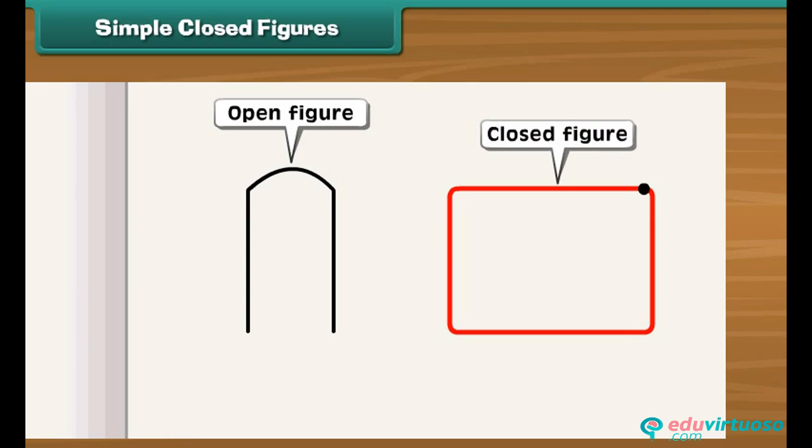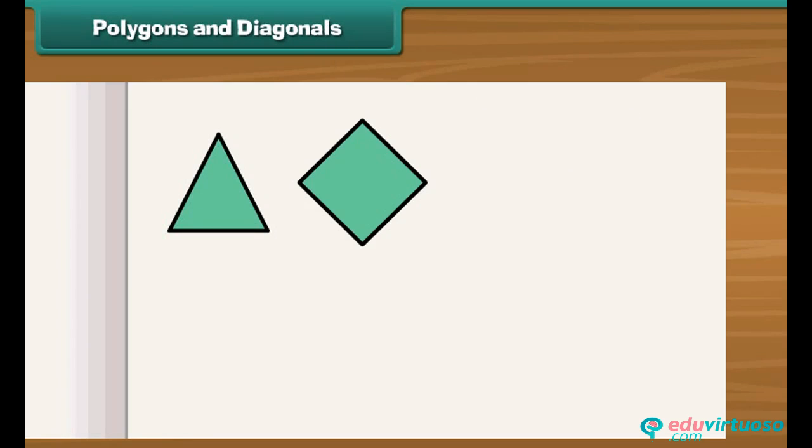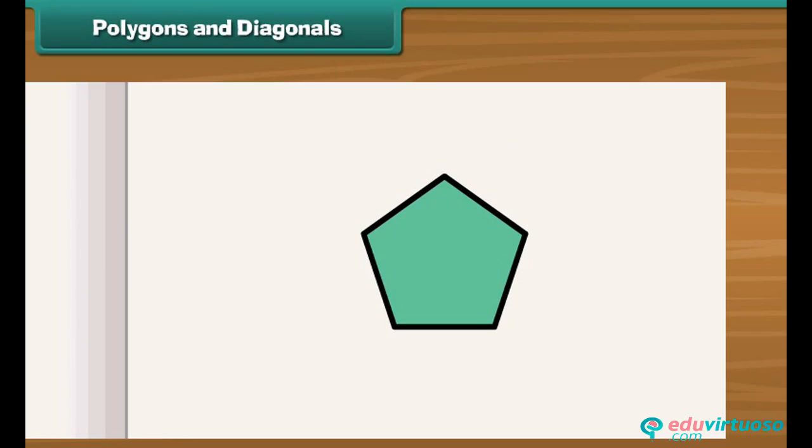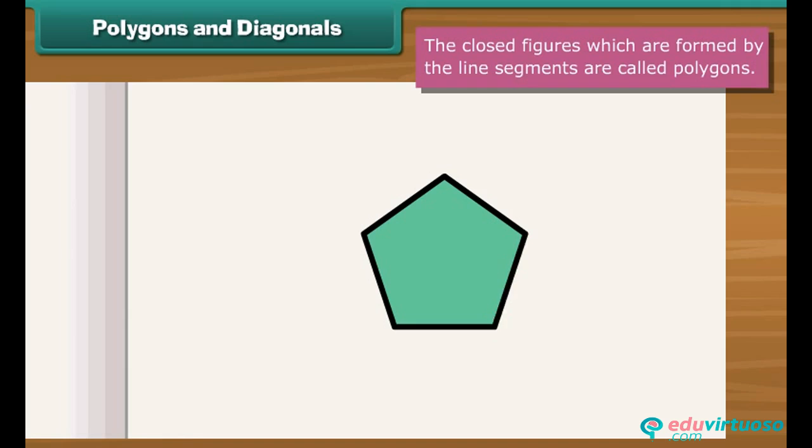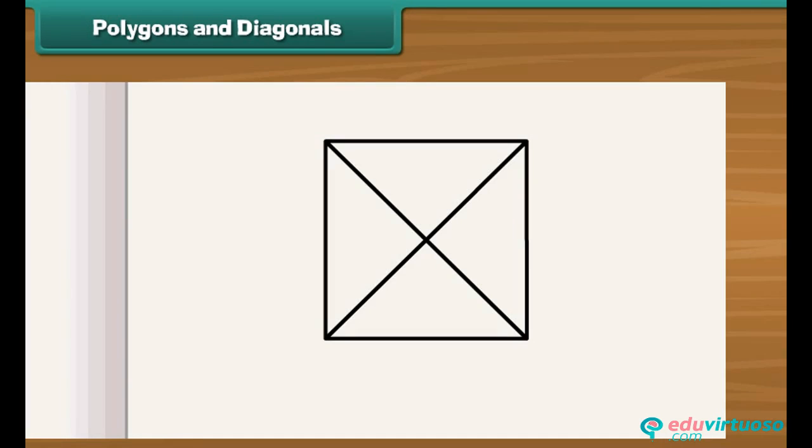Look at these closed figures. These are formed by the line segments. The closed figures which are formed by the line segments are called polygons. The line segment of a polygon is called its side. The point where two line segments meet is called its vertex. What will you call these line segments? The line segments drawn from one vertex to another vertex are called diagonals. A side of a polygon is not a diagonal.